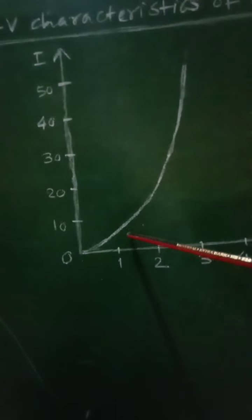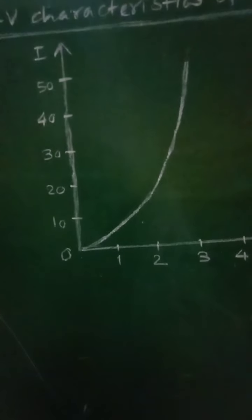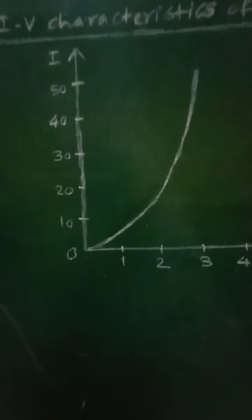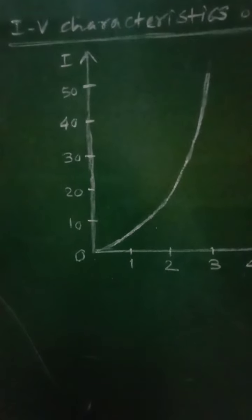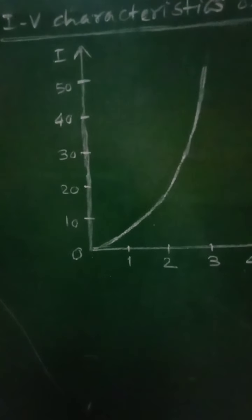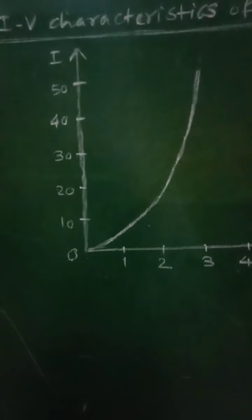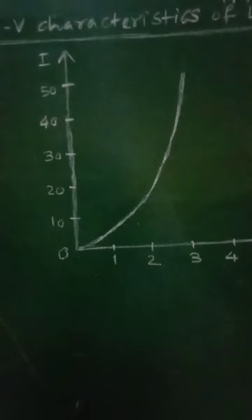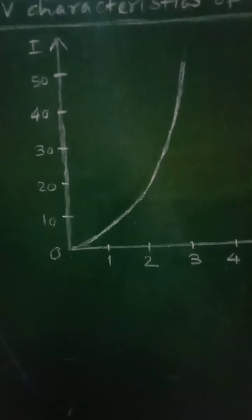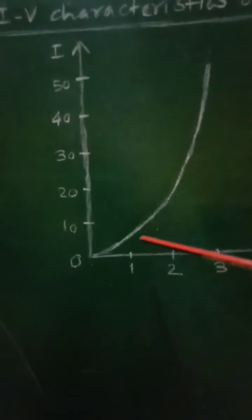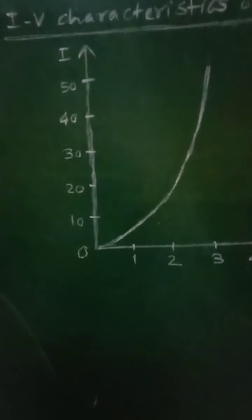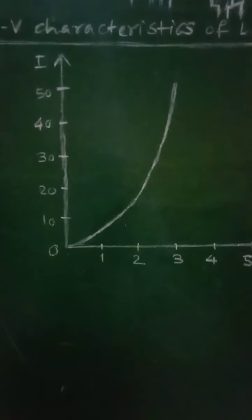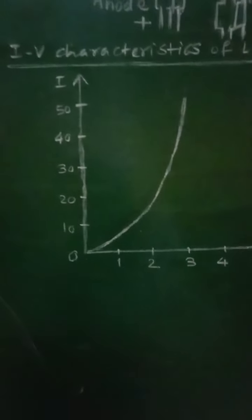As forward bias current flowing through the junction increases, the light emitted also increases. As voltage increases, current increases accordingly. This represents the IV characteristics of the LED.